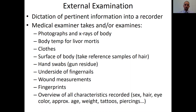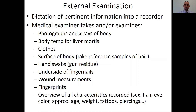We start with the external examination, which includes photographs and x-rays to see if there are broken bones. We take the body's temperature and collect samples. One key sample is hair — if other hair is found at a crime scene or on another person, that can make a connection. We also take hand swabs, because when you fire a firearm you get gunshot residue on your hands.